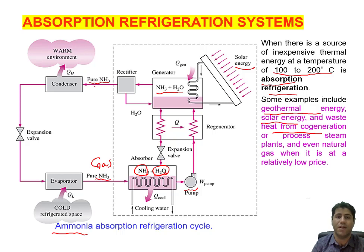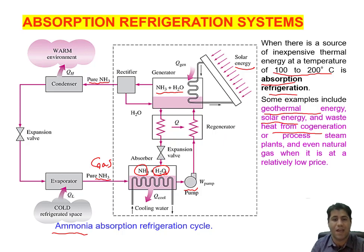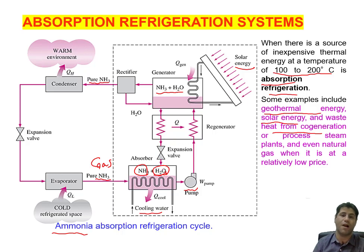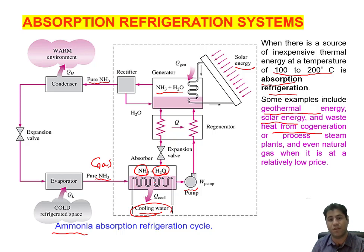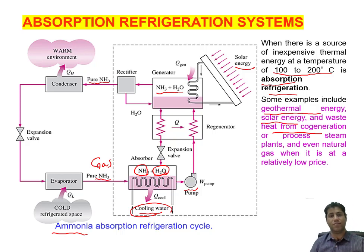The pure NH₃ leaving the generator is high-pressure ammonia, while the ammonia entering the absorber is low-pressure. So the compression is accomplished by this cycle. The water transport medium is then returned to the absorber. A regenerator and cooling water are extra components that improve efficiency. The cooling water helps lower the temperature so that more NH₃ can dissolve in H₂O, and the pump sends the solution to the generator.